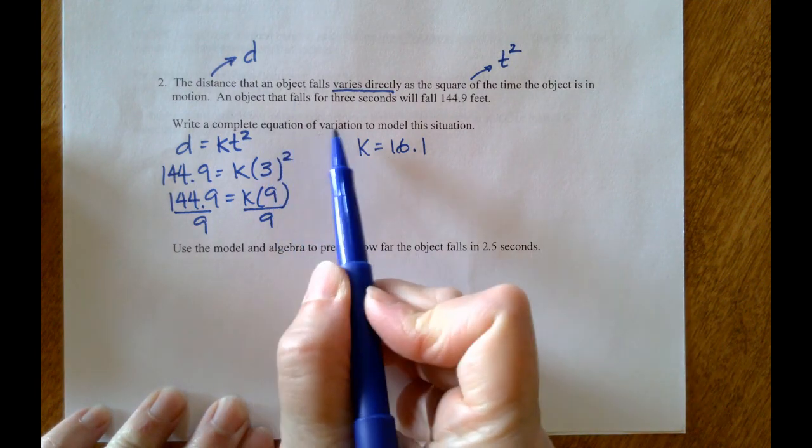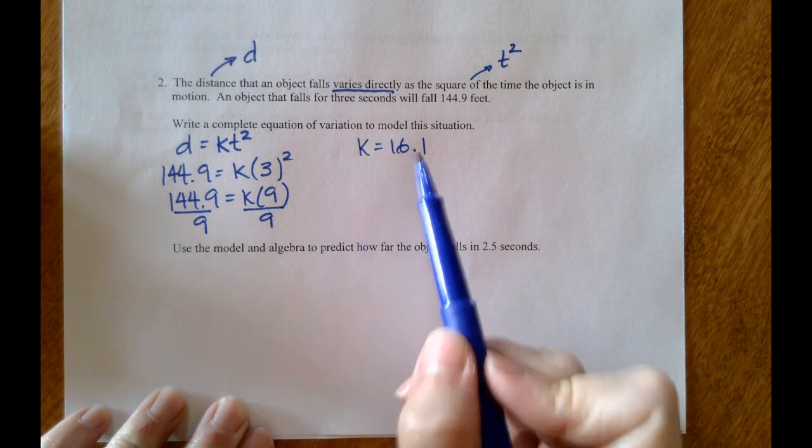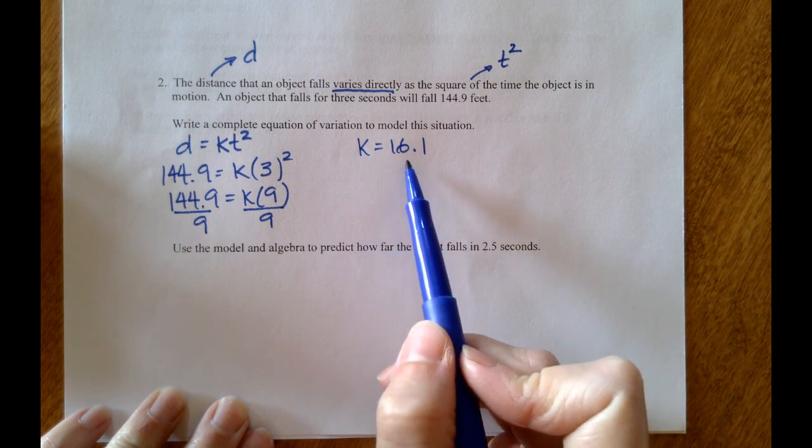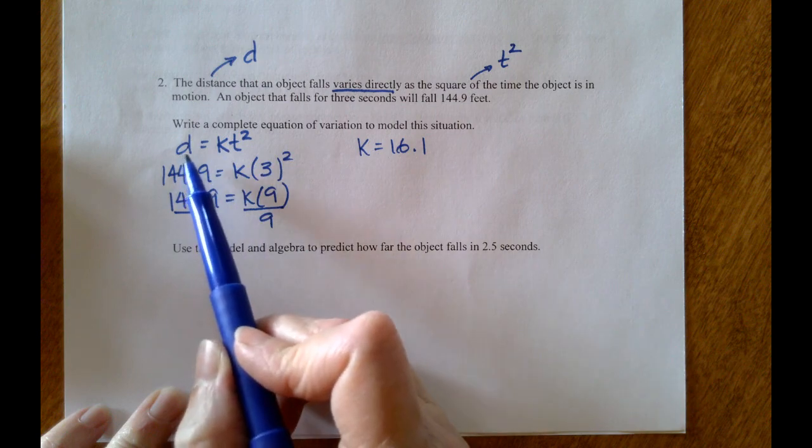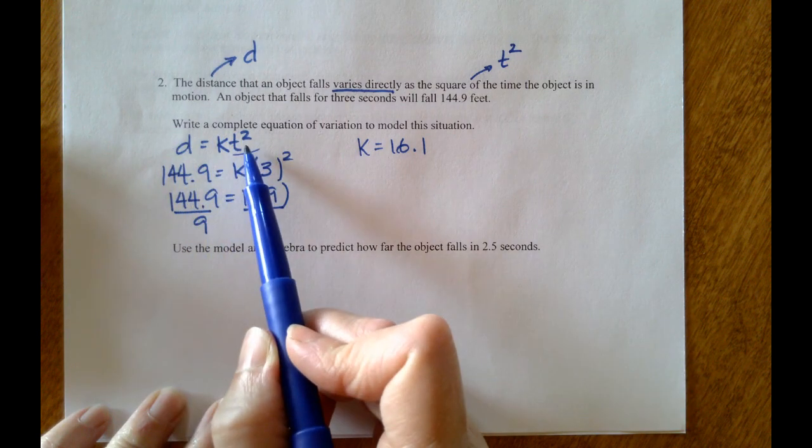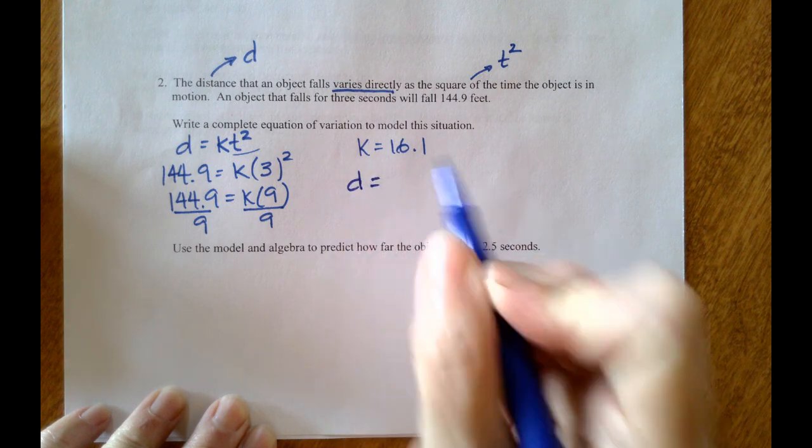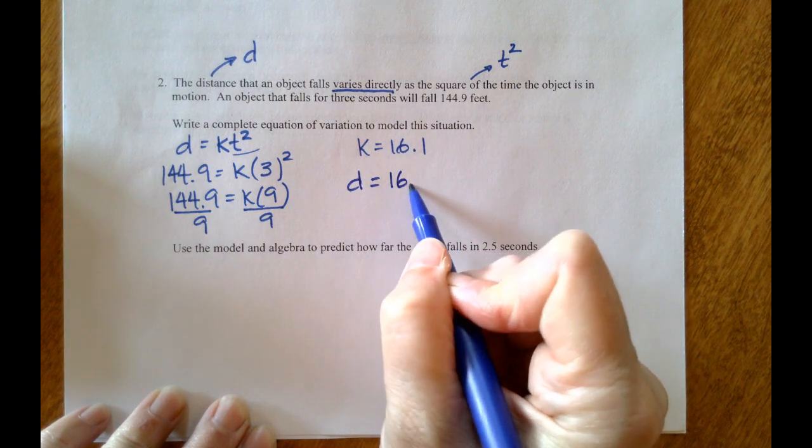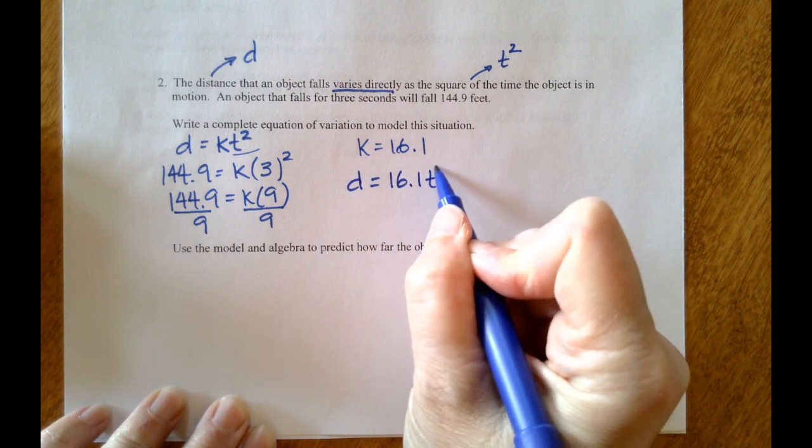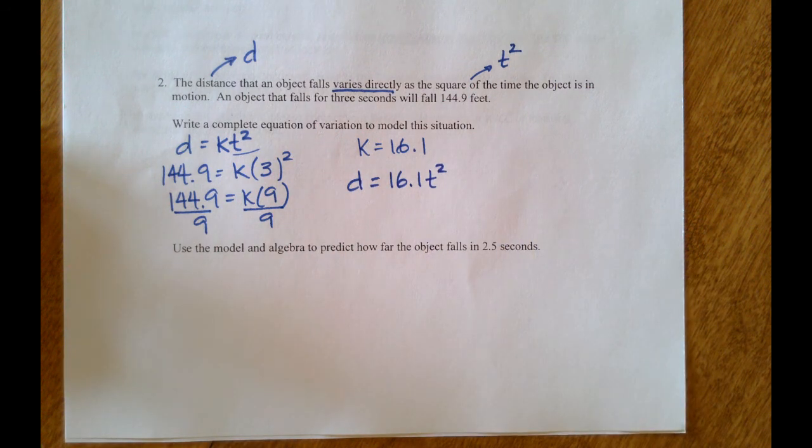The complete equation of variation is not k equals 16.1, it's this starter equation, this generic one with the k value filled in. One more step here: d equals 16.1 times t squared. That's your complete equation.